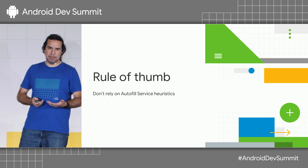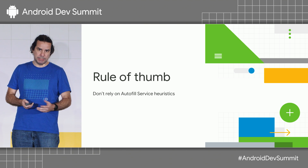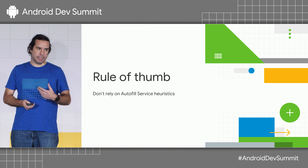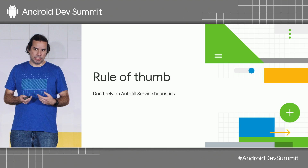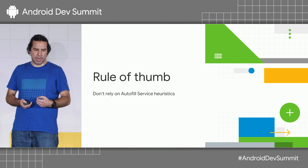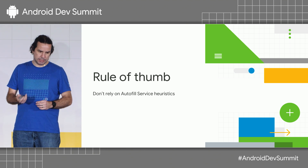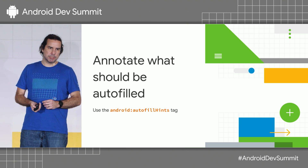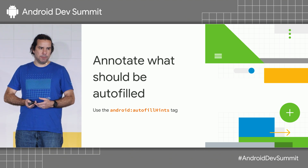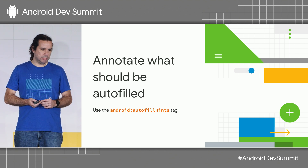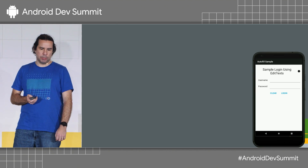The rule of thumb — the main tip I would like to give — is you should not rely on the Autofill service heuristics. Rather, you should provide your own hints to make sure that the password manager or the Autofill service does its job properly. You can do that quickly and easily by just annotating your XML views. The first thing you should do is make sure that you annotate what should be autofilled, and you do that using the android:autofillHints tag. Let's take a quick look at an example.